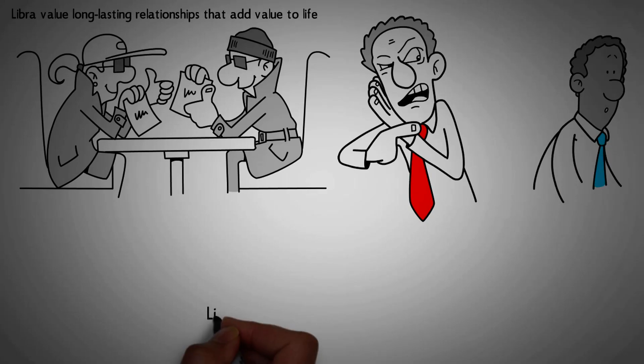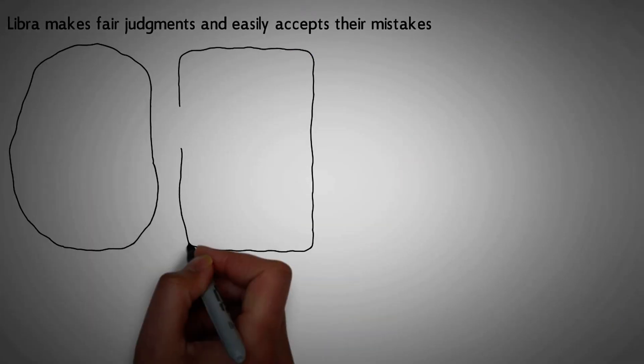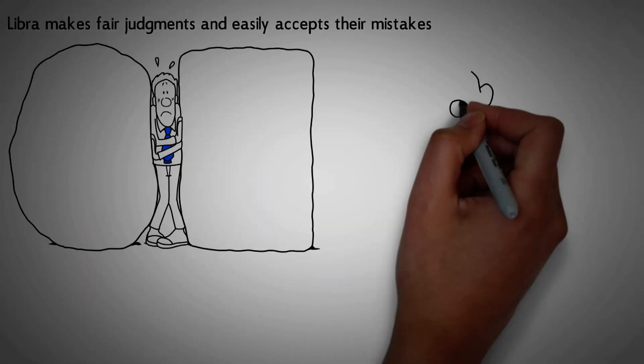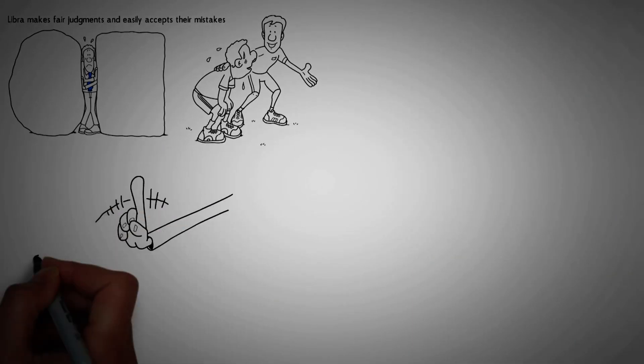Number 3. Libra makes fair judgments and easily accepts their mistakes. Libra stands for what is right no matter how painful it will be. They support the weak and innocent. If they are wrong, they take full responsibility and avoid the blame game.